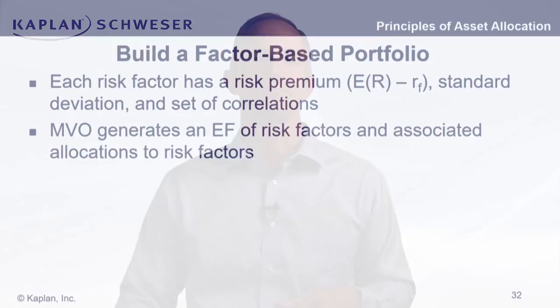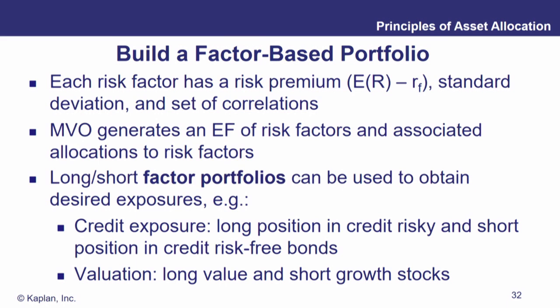The optimization we're going to run is very much the same — it's just that instead of taking asset classes, now we're using risk factors. We create long-short factor portfolios to obtain the desired outcomes. For example, for credit exposure, that long-short factor portfolio takes a long position in credit risky bonds and a short position in credit risk-free bonds. For a valuation factor, we go long value and short growth — that's the Fama-French three-factor HML factor, high minus low: long high book-to-market value stocks, short low book-to-market growth stocks.